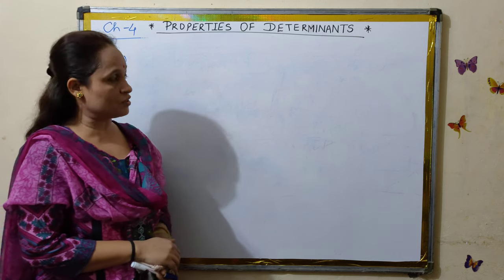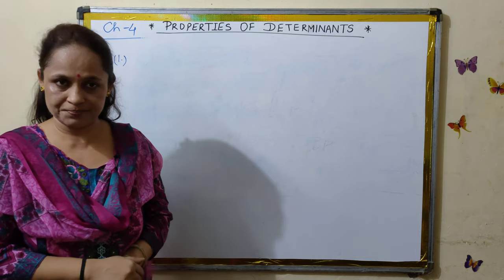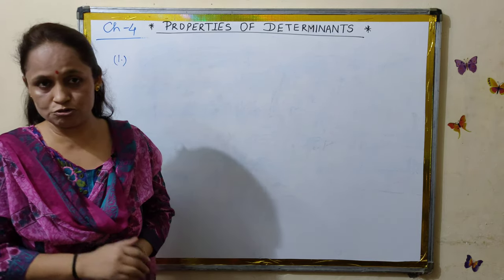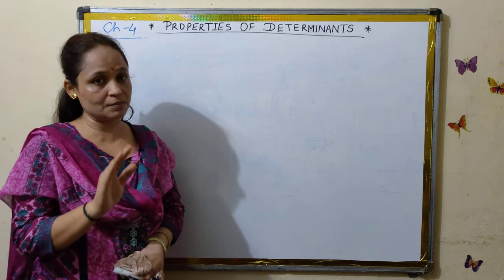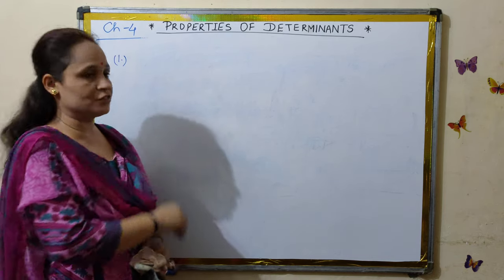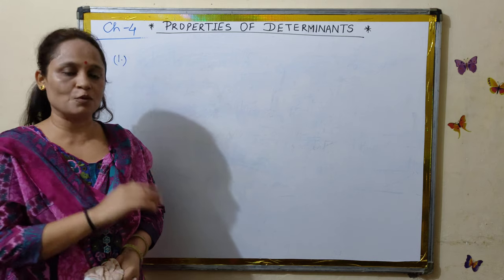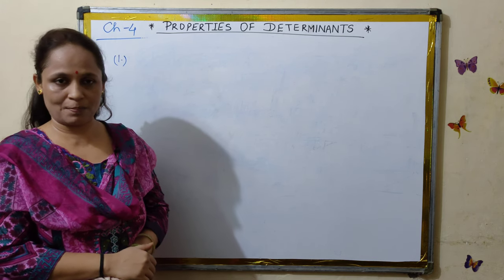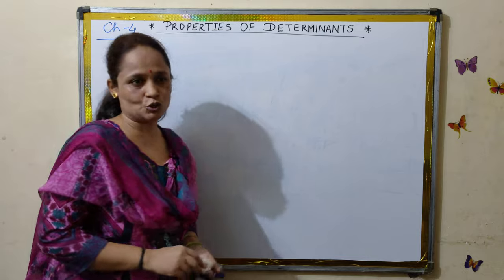Sometimes the entries of determinants are a little complicated — it could be algebraic, the numbers could be huge. In that case, determinants can easily be evaluated with the help of the properties. So we learn the properties first and then understand how to apply them in the questions. Let's do that.